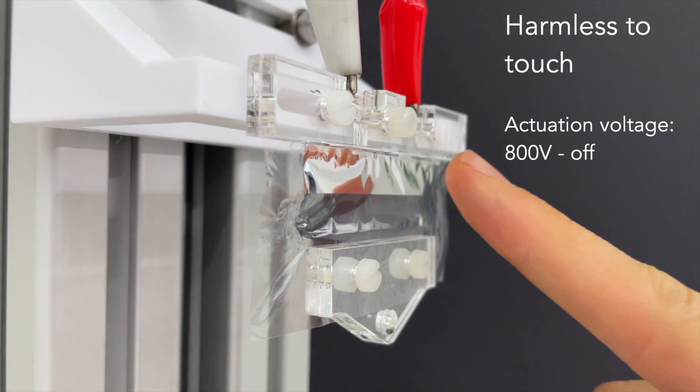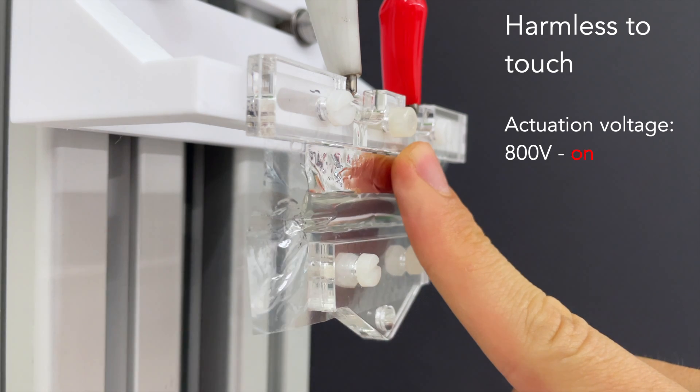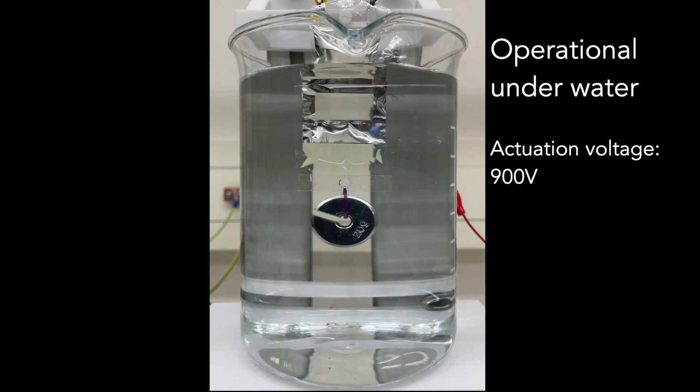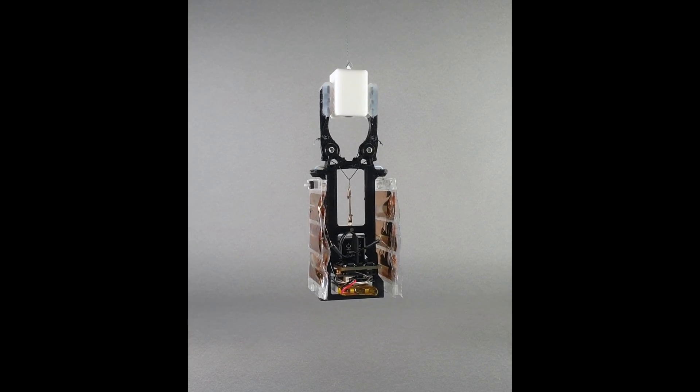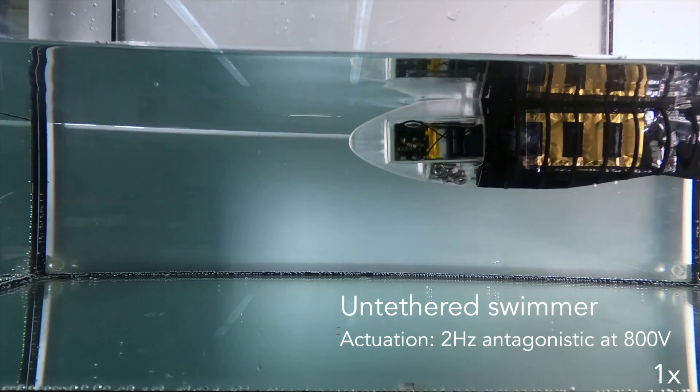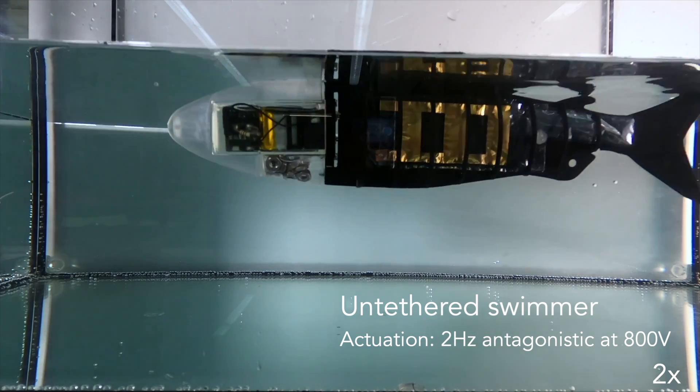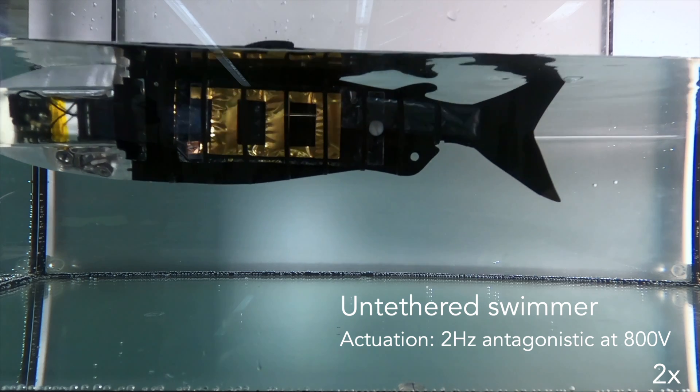The composite structure of the actuator ensures safety for touch during operation and also allows functionality underwater. The lower actuation voltage enables efficient and small power electronics within mobile untethered robots. These features broaden the potential applications in various robotic systems.